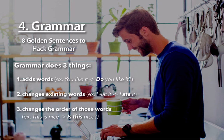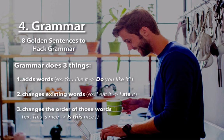The fourth step is to understand grammar, which is a very important aspect of learning a language. Most people try to complicate grammar in ways that are not supportive, and it generally ends up confusing us more than it helps us. What we want to do in this lesson is to simplify grammar. Grammar really does three things: it adds words — such as 'you like it' becoming 'do you like it'; it changes existing words — like 'I eat it' to 'I ate it'; and it changes the order of words — such as 'this is nice' to 'is this nice.' That's all grammar is really meant for.